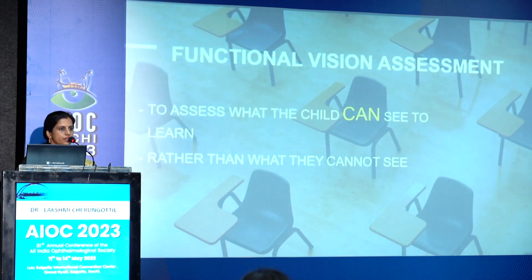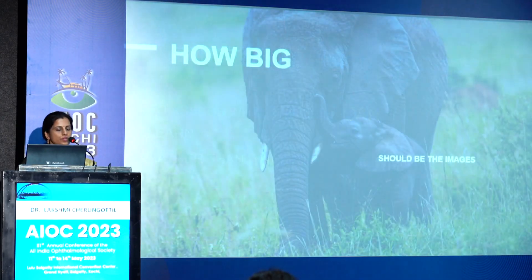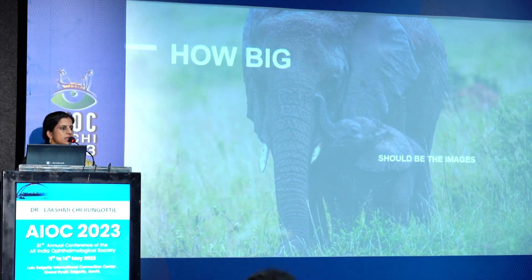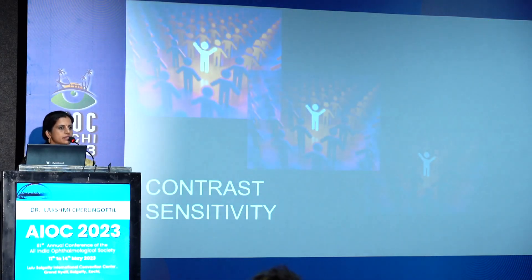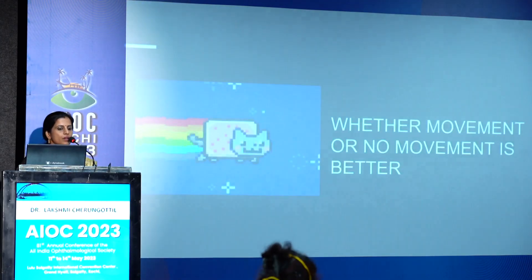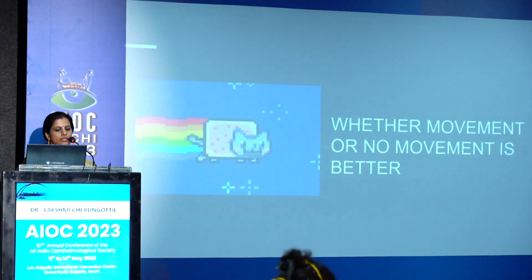We go in for a functional visual assessment where we see what the child can actually see, rather than just listing what the child cannot see. We need to find out the child's abilities — which field of vision the child is utilizing, how big the images need to be presented, what color of images or toys should be given so the child can connect, how contrast sensitivity is affecting visual development, and whether movement helps in communicating with the child better.